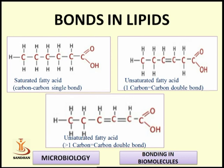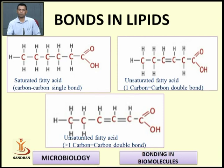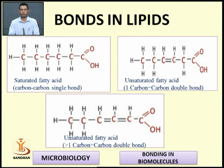Discussing the bonding present inside the lipid: in saturated fatty acids, carbon-carbon single bonds are present with no double bonds. In monounsaturated fatty acids, one carbon-carbon double bond is present. In polyunsaturated fatty acids, more than one carbon-carbon double bond is present. So we have three different structures: saturated, monounsaturated, and polyunsaturated.